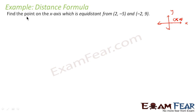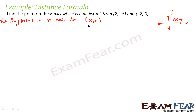So we can say: let any point on the x-axis be (x, 0). This is our point. The question says from this point, the distance to (2, -5) and the distance to (-2, -9) are the same. We have to find the value of x.